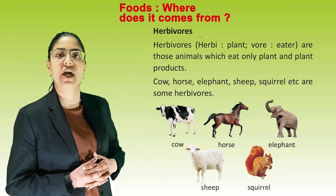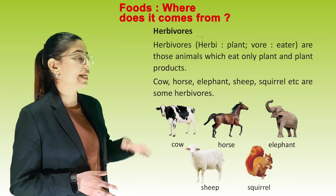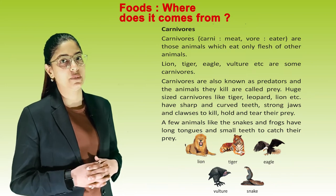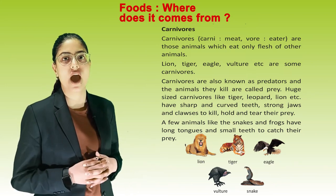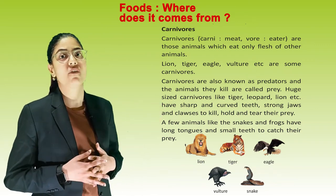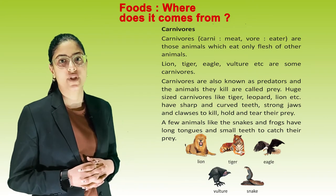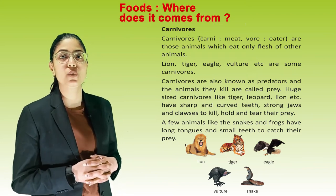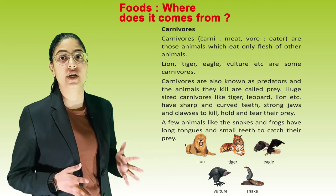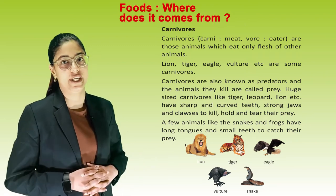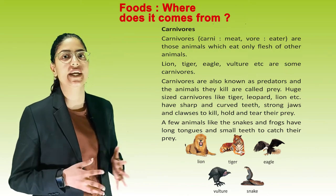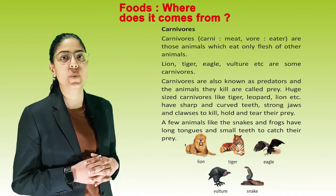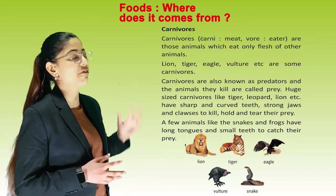Carnivorous — 'carni' means meat and 'vore' means eater. Those animals which eat only flesh of other animals are carnivorous, like lion, tiger, eagle, and vulture. Carnivorous are also known as predators, and the animals they kill are called prey. Large carnivorous like tiger, leopard, and lion have sharp and curved teeth, strong jaws and claws to kill, hold, and tear their prey. A few animals like snakes and frogs have long tongues and small teeth to catch their prey. These are some pictures of carnivorous animals.